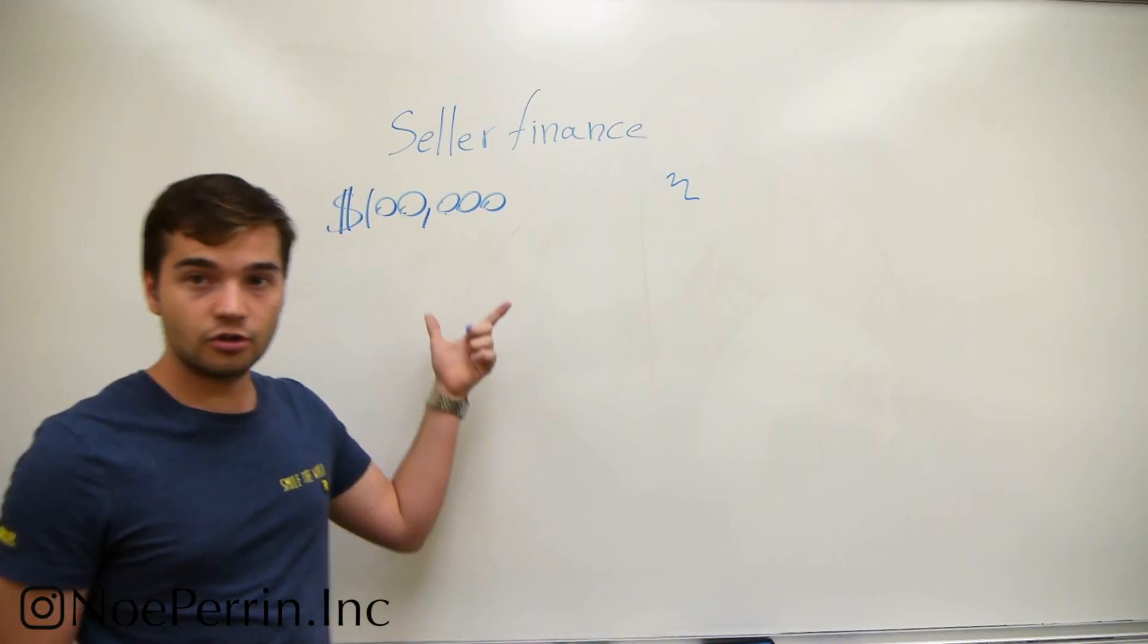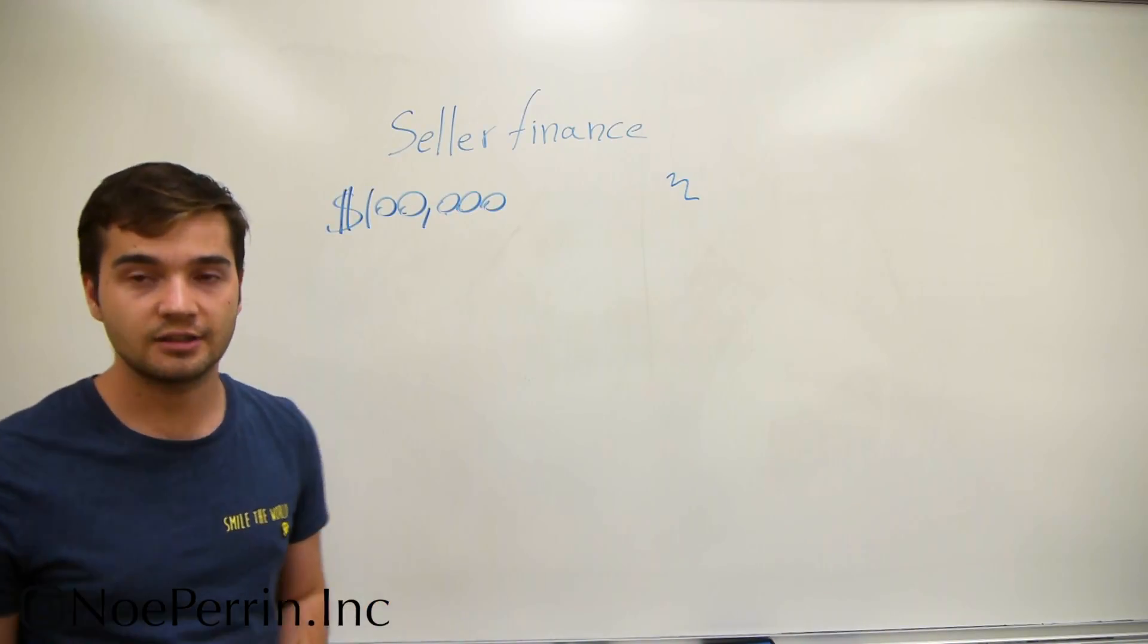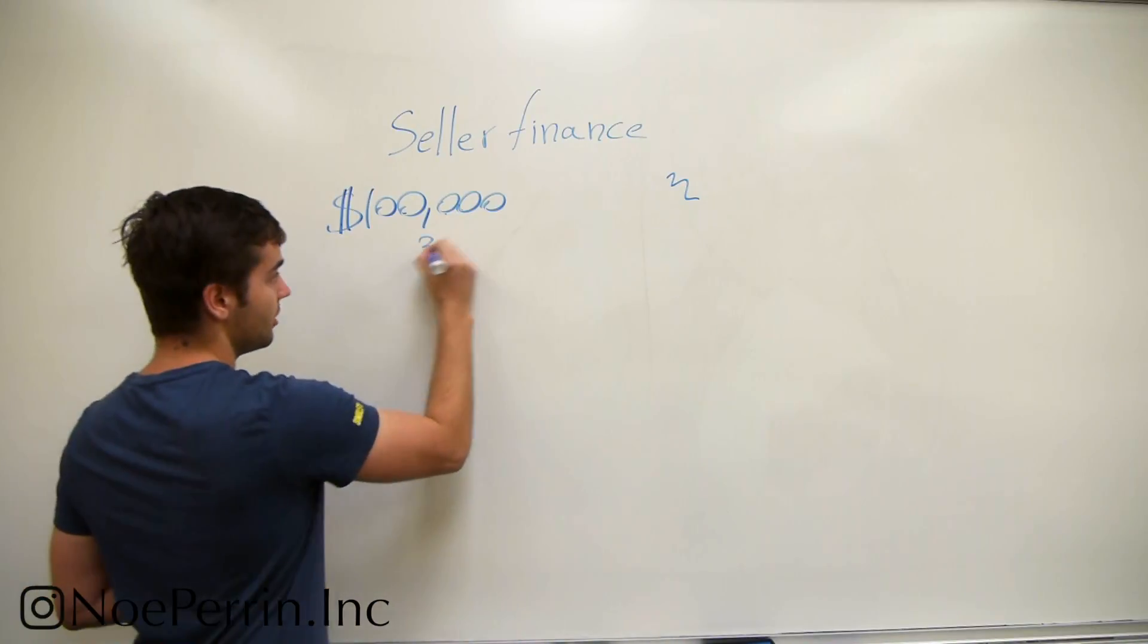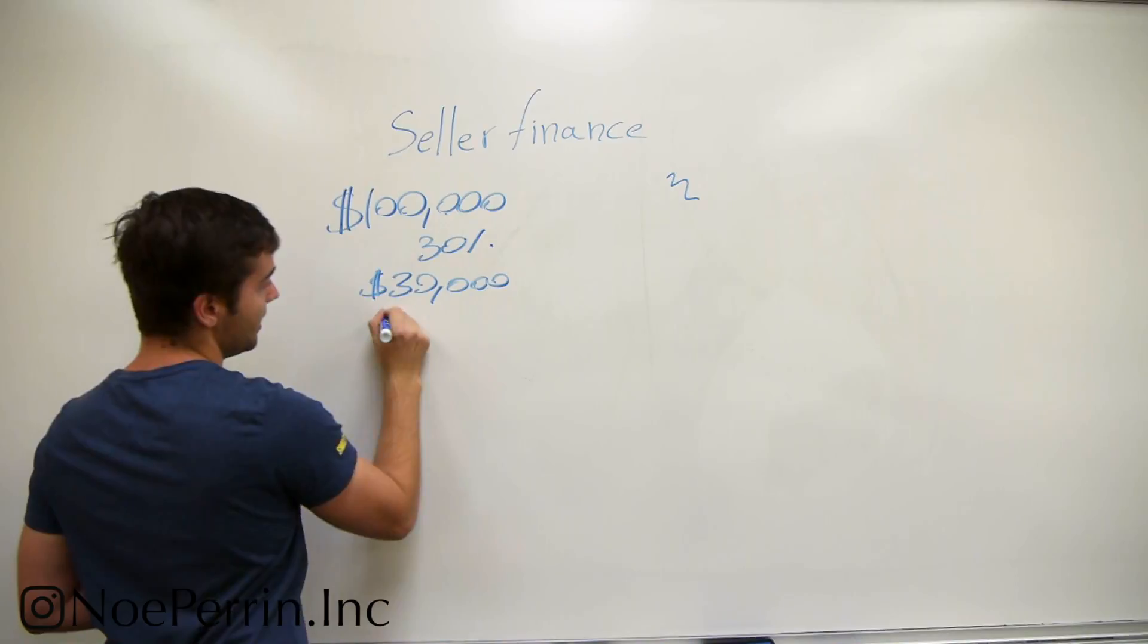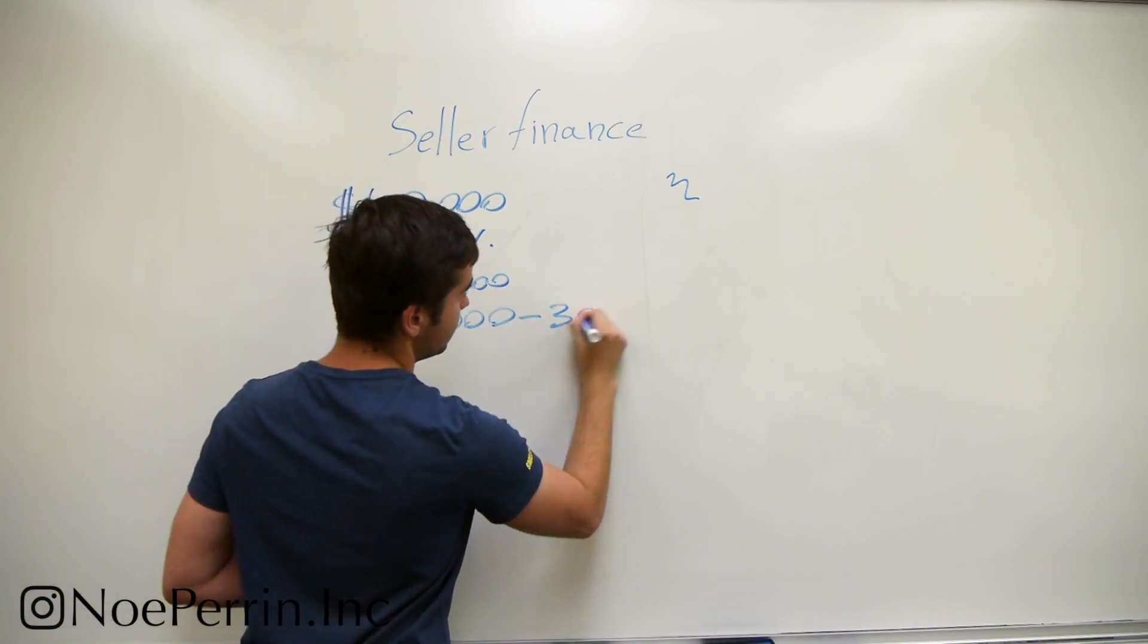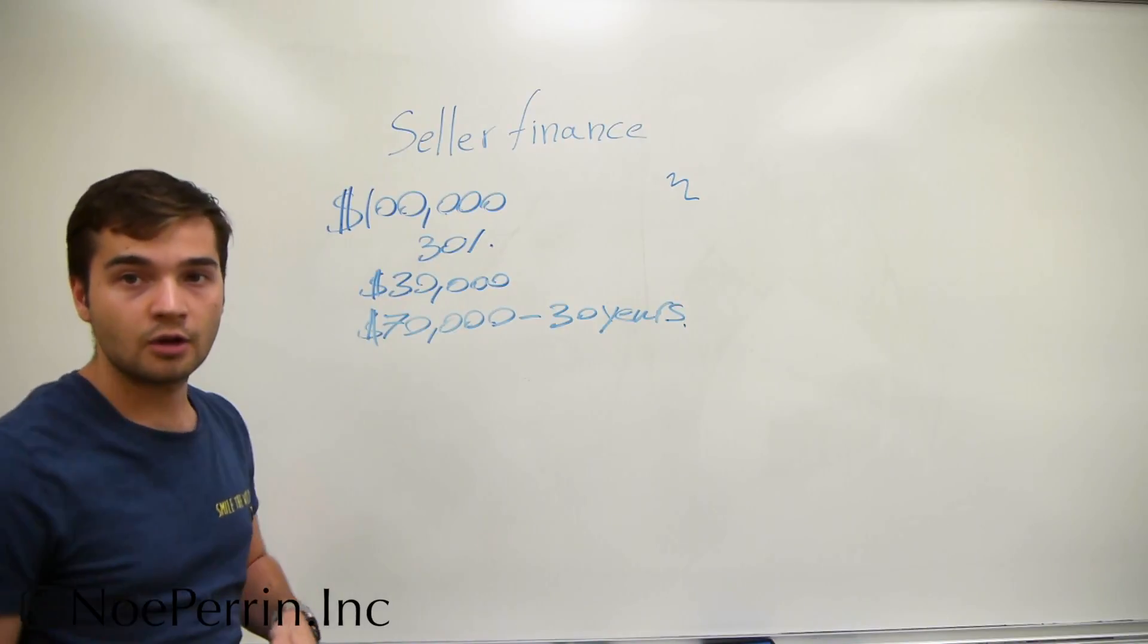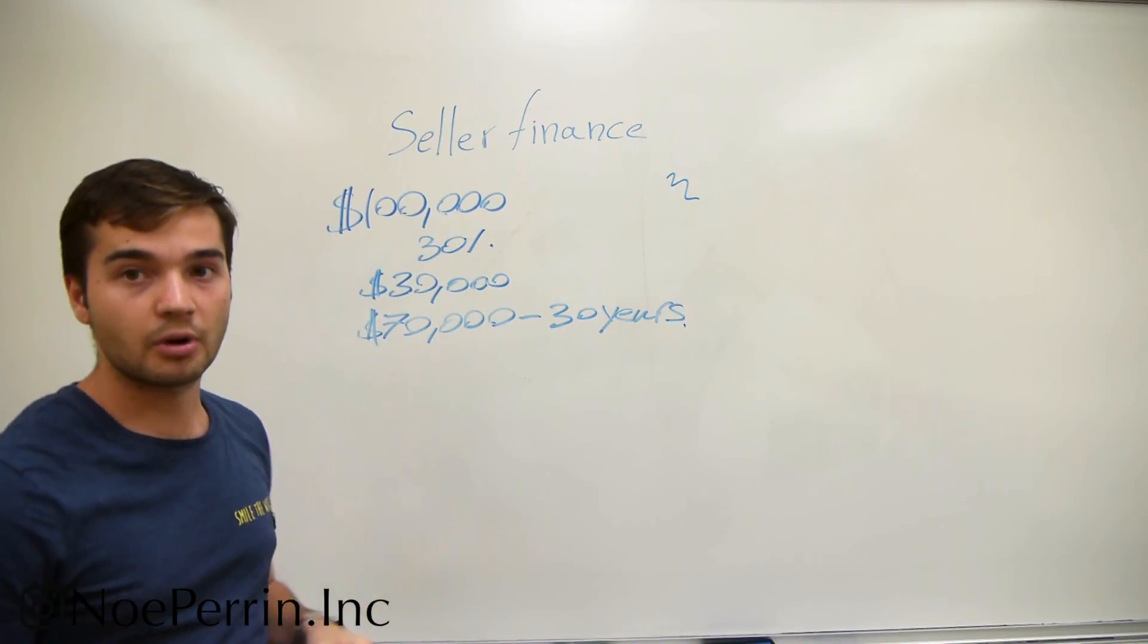So let's say you have a house for $100,000 and you want to do a seller finance deal. The seller might say, put 30% down, which is $30,000, and pay the other $70,000. You can pay it to me over 30 years. And then what you'll do is you'll find $30,000 and then buy the property with financing.